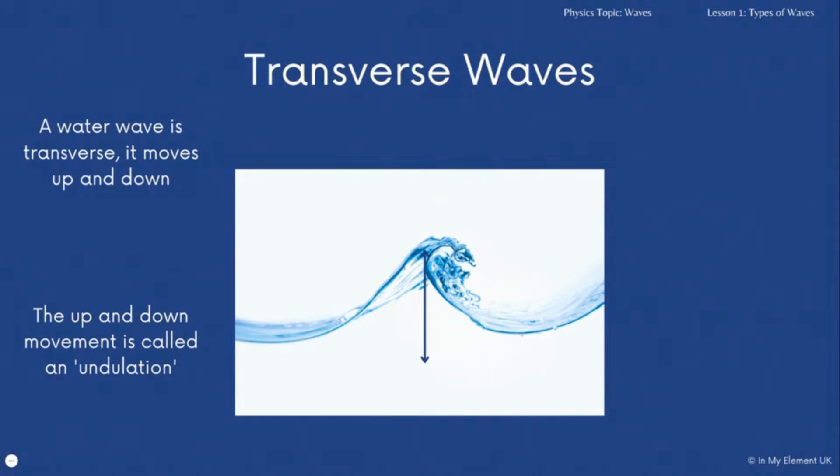That undulation is at a right angle to the overall movement of the wave. You can see the up and down undulation of that wave, but you can also see the overall forward movement to the right where that wave is intending to go.